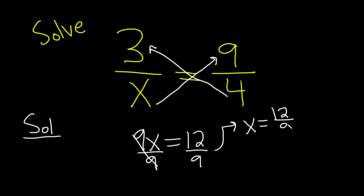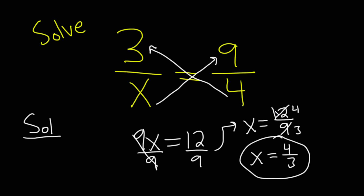And then we should be able to simplify this. I think 3 is a divisor of both 9 and 12. 3 goes into 12 4 times, and it goes into 9 3 times. So we're just going to get 4 over 3 as our final answer in this particular equation with fractions. So hopefully after watching this video, you have learned some math. Take care.